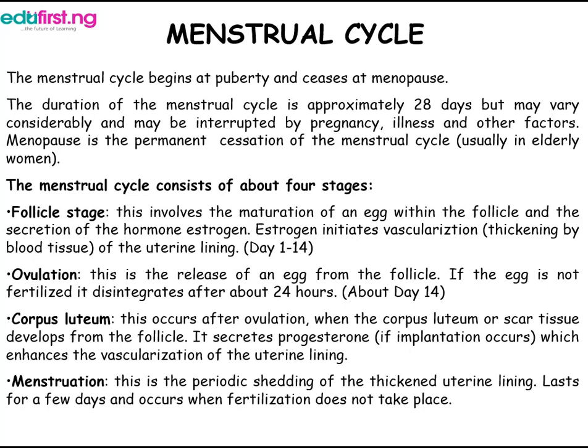The follicle stage involves the maturation of an egg within the follicle and secretion of the hormone estrogen. Estrogen initiates vascularization — that is, thickening by blood tissue — of the uterine lining, roughly between days 1 to 14. Ovulation is the release of an egg from the follicle. If the egg is not fertilized, it disintegrates after about 24 hours, at about day 14.